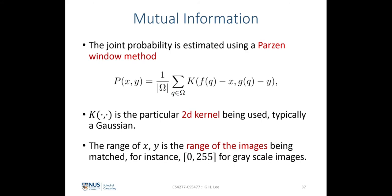The joint probability between two random variables x and y can be computed using the Parzen window method. In our context, where we are comparing two patches f and g, the joint probability over the two random variables — x representing the vector of f, and y denoting the vector of g — would be given by this equation.